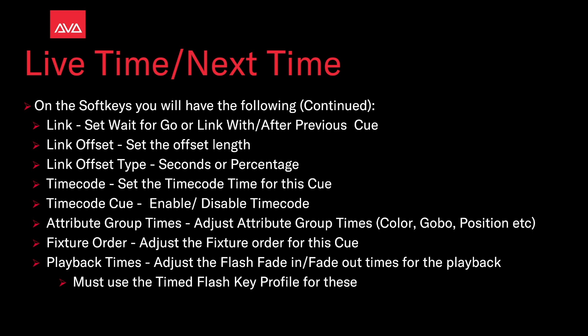Attribute group options include color, position, and so on. Fixture Order — adjust the fixture order for this queue. Playback Times — adjust the flash fade in and fade out times for this playback. To use those, you must use the timed flash key profile.